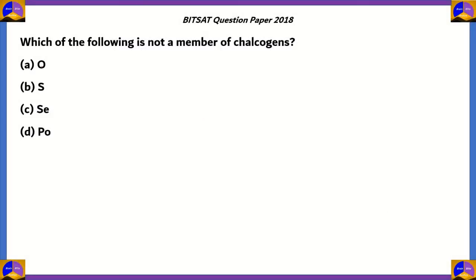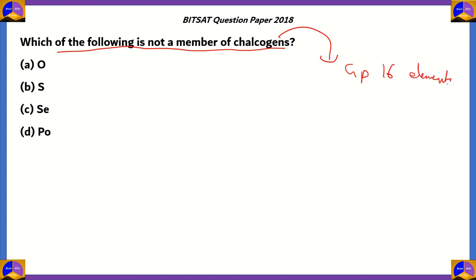The next question asks: which of the following is not a member of chalcogens? Chalcogens refer to group 16 elements, and the name 'chalcogen' means ore-forming. They are called this because group 16 elements form many ores.